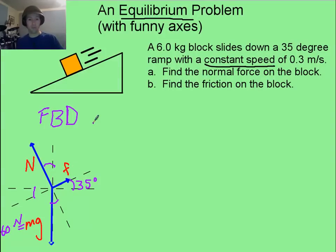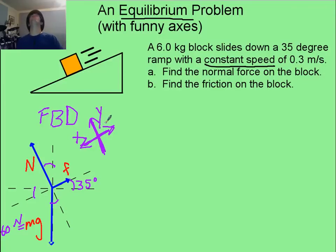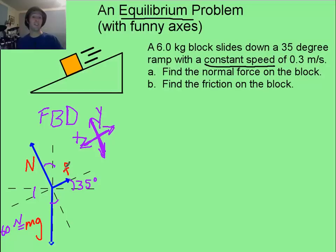But what you can do is: x and y are not constrained to be horizontal and vertical. We are going to make down the slope our x-axis. And then y is going to be perpendicular to the slope. That puts the normal force and friction right on the axes, and that makes things much easier.